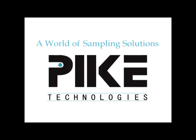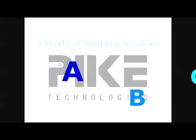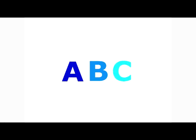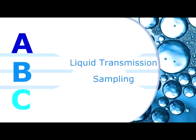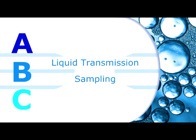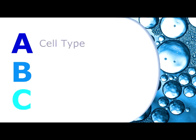Pike Technologies presents the ABCs of liquid transmission sampling. There are three primary considerations when choosing a liquid transmission cell: the cell type, the window type, and path length.